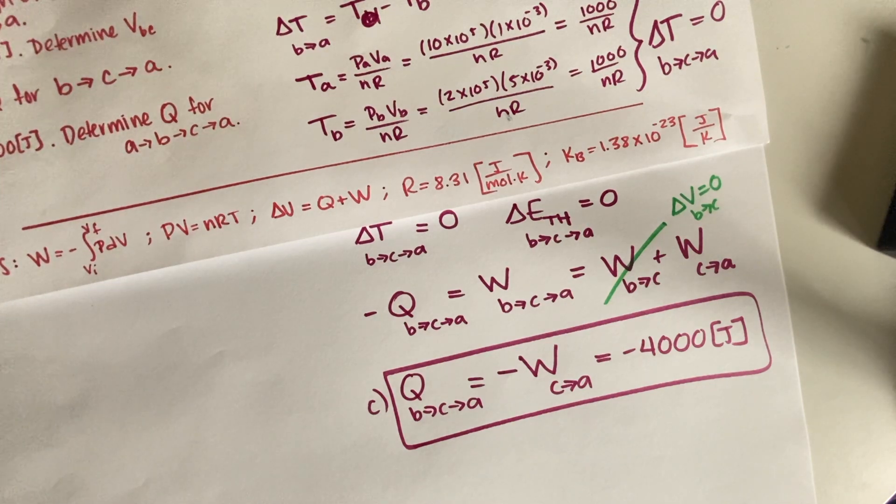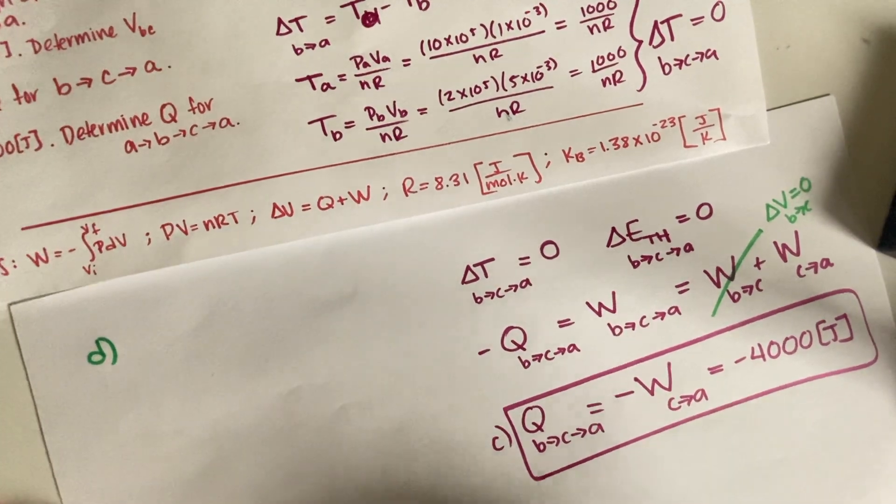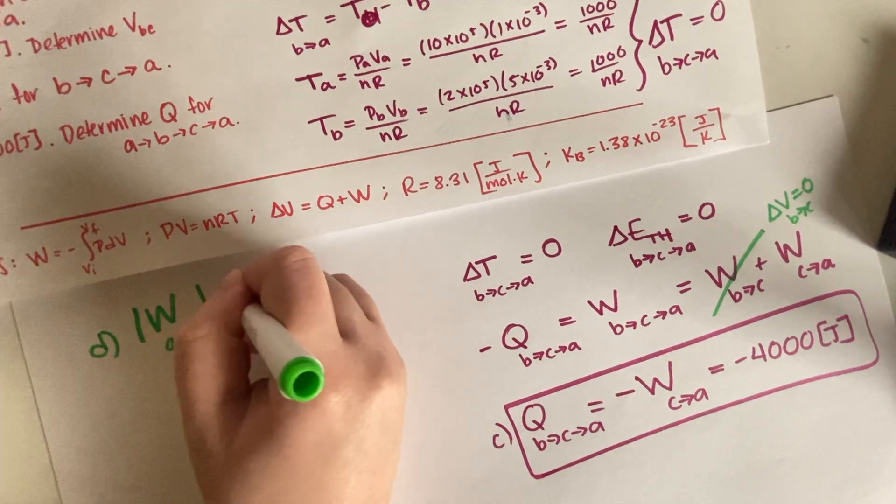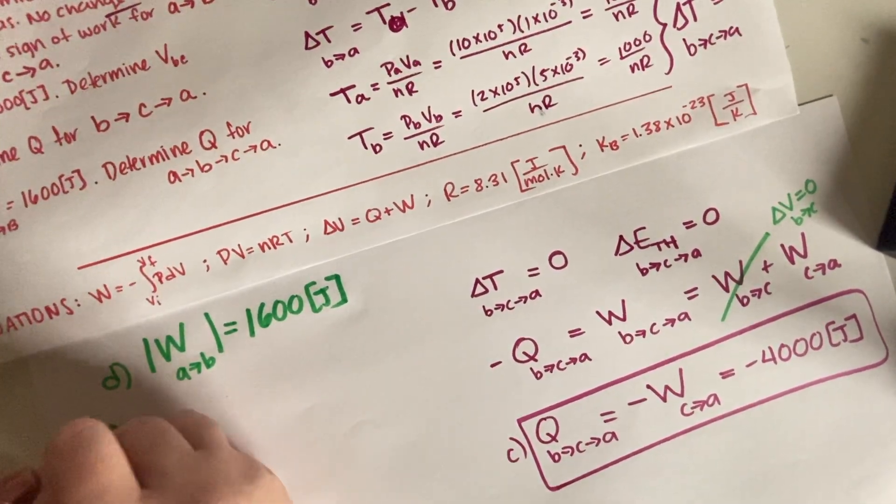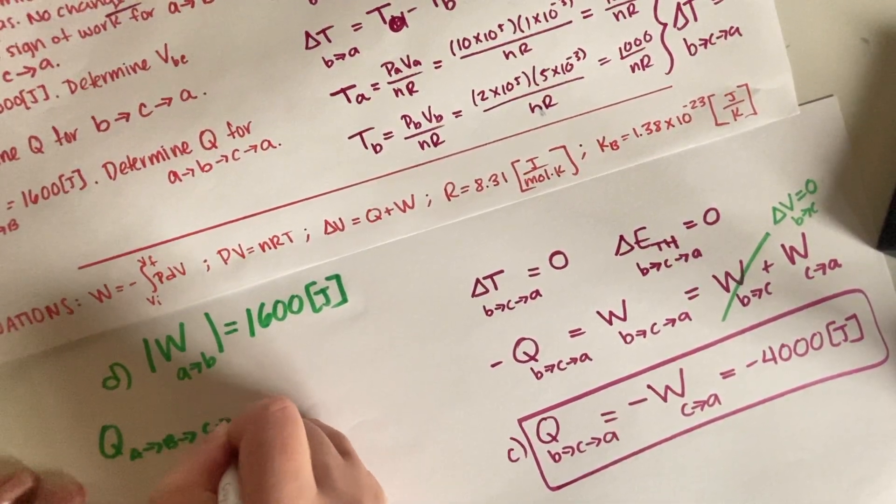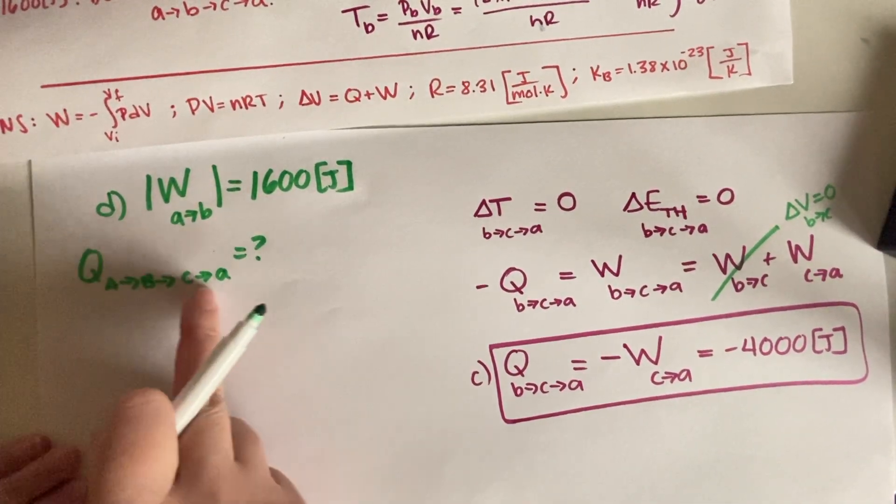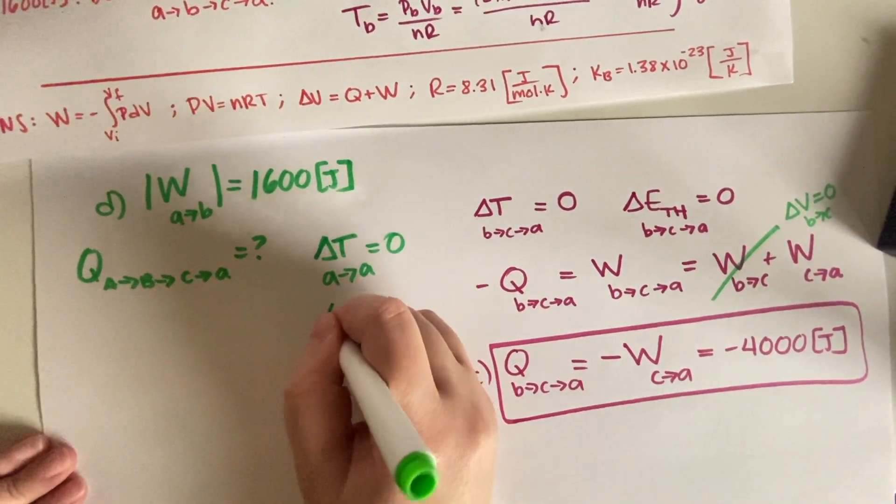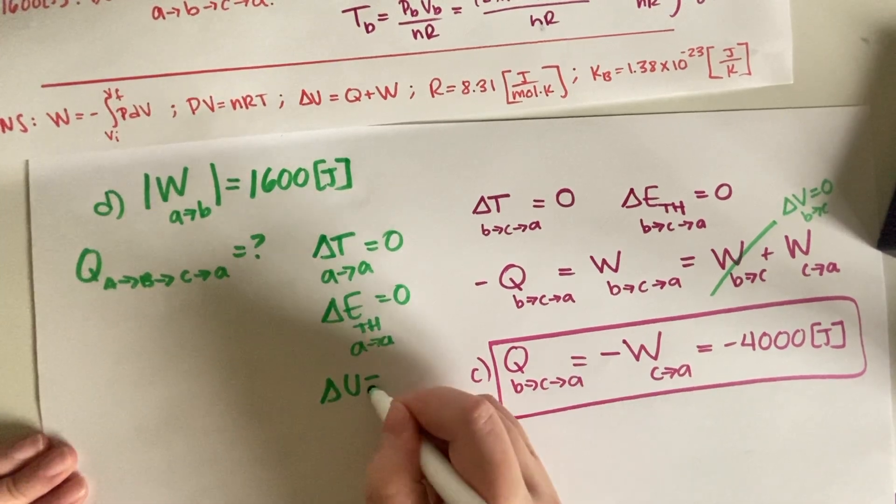And now we're going to move on to part D. So part D says that the amount of work, the magnitude of the work for process A to B is equal to 1600 joules, and we have to determine Q for the full cycle A B C A. So this is kind of just doing the exact same thing, because when you are going from A B C A that's a full circle, which means that your delta T going from A to A is equal to zero, which means that the change in thermal energy going from A to A is equal to zero. That means that change in internal energy is equal to zero, and we end up with the same situation. We end up that negative Q going A to A has to be equal to W when you go A to A.